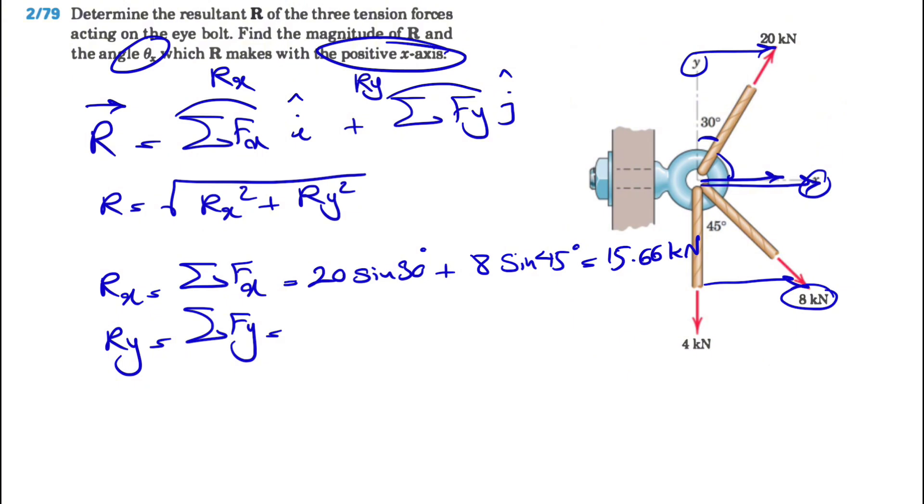If you want to find Ry, the sum of all forces in y direction, for the 20 kilonewton this would be the y component, so this time we have 20 cosine of 30 degrees. As we can see, the other two are downward. For the 8 kilonewton this is the y component, so negative 8 cosine of 45 degrees, and we have the 4 kilonewton downward.